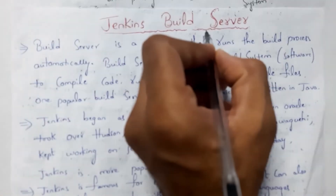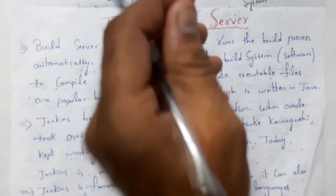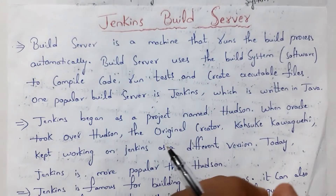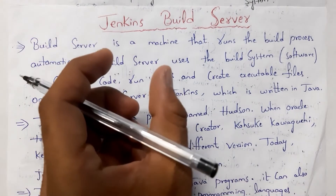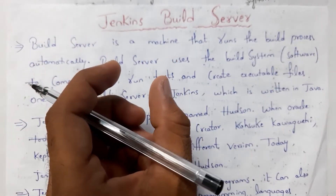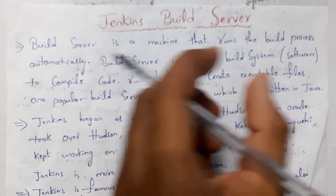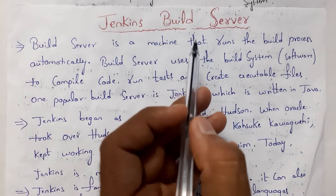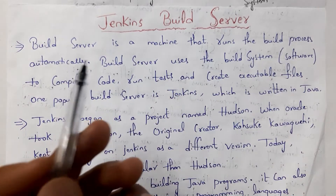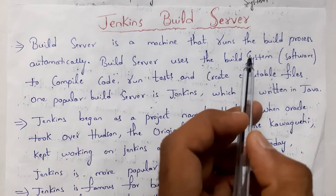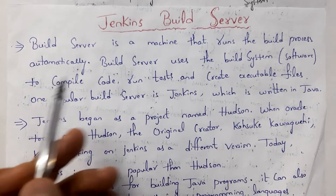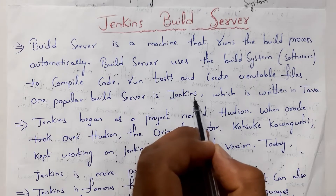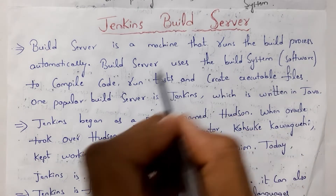Next, I will explain what is a Jenkins build server. A build system is software, whereas a build server is a computer — a system — that runs the build process automatically. The build server uses the build system software to compile code, test code, and create executable files. One of the most popular build servers is Jenkins, which is written in Java.